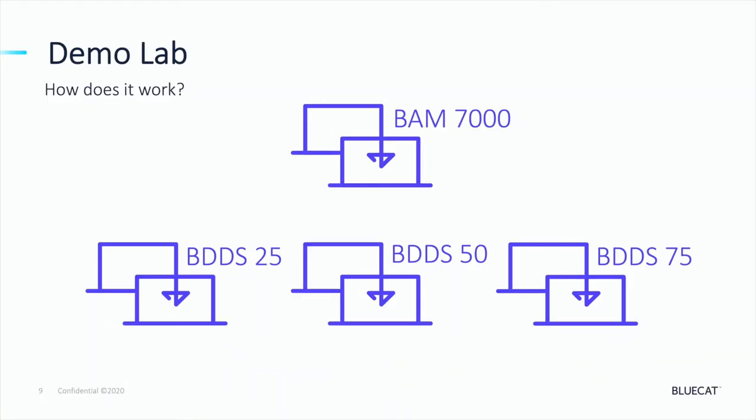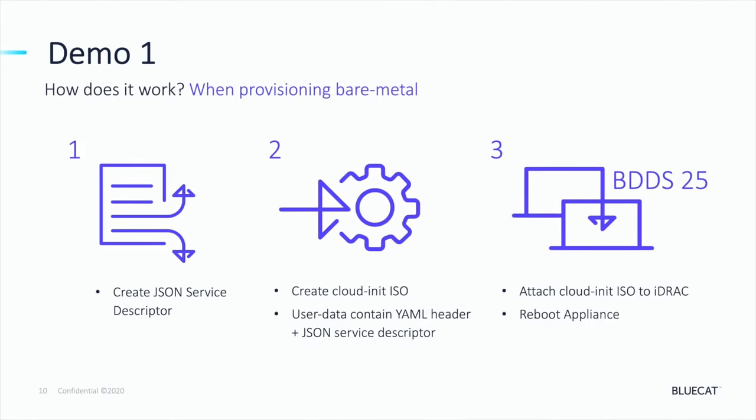Let's now take a look at our new provisioning functionality in action. In the demo lab we have a BAM 7000 running Integrity 9.3 and BDDS 2550 and 75 appliances imaged with Integrity 9.3.2. In Demo 1 we're going to be looking at provisioning a new bare-metal BDDS25 appliance fresh out of the box. In step one we have our predefined JSON service descriptor.